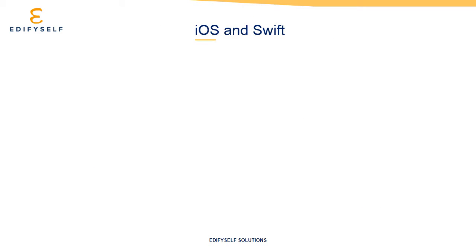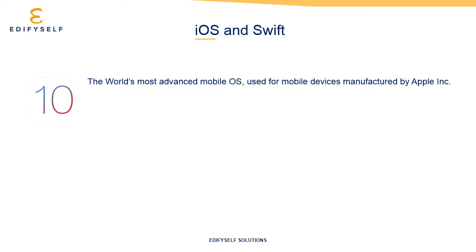What is iOS? iOS is the core operating system and the foundation for iOS devices from Apple, like iPhone, iPad, iPod Touch, and Watch OS. It has an easy-to-use interface with amazing features and security, and is designed to look and work beautifully, engaging even the simplest tasks.